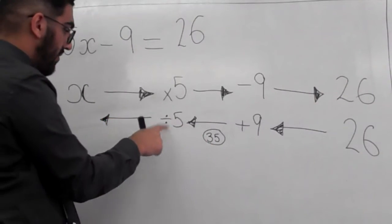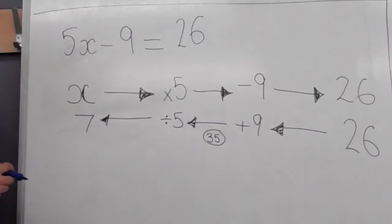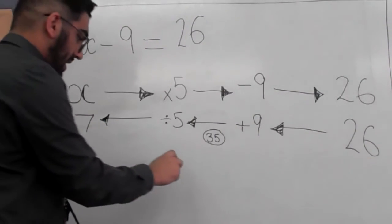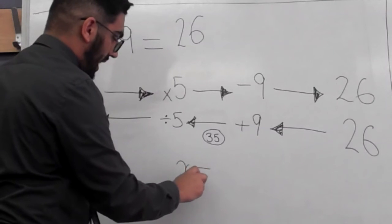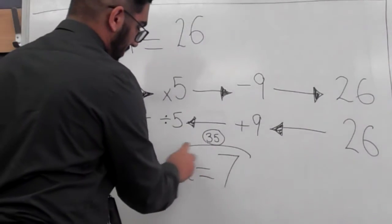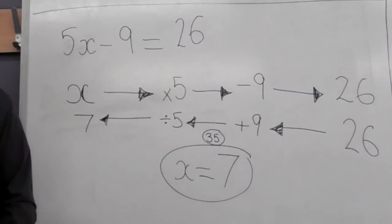So 35 divided by 5 gives us 7. Now the most important part, that people usually forget, is actually writing their answer out. X is equal to 7. And that's how you solve an equation.